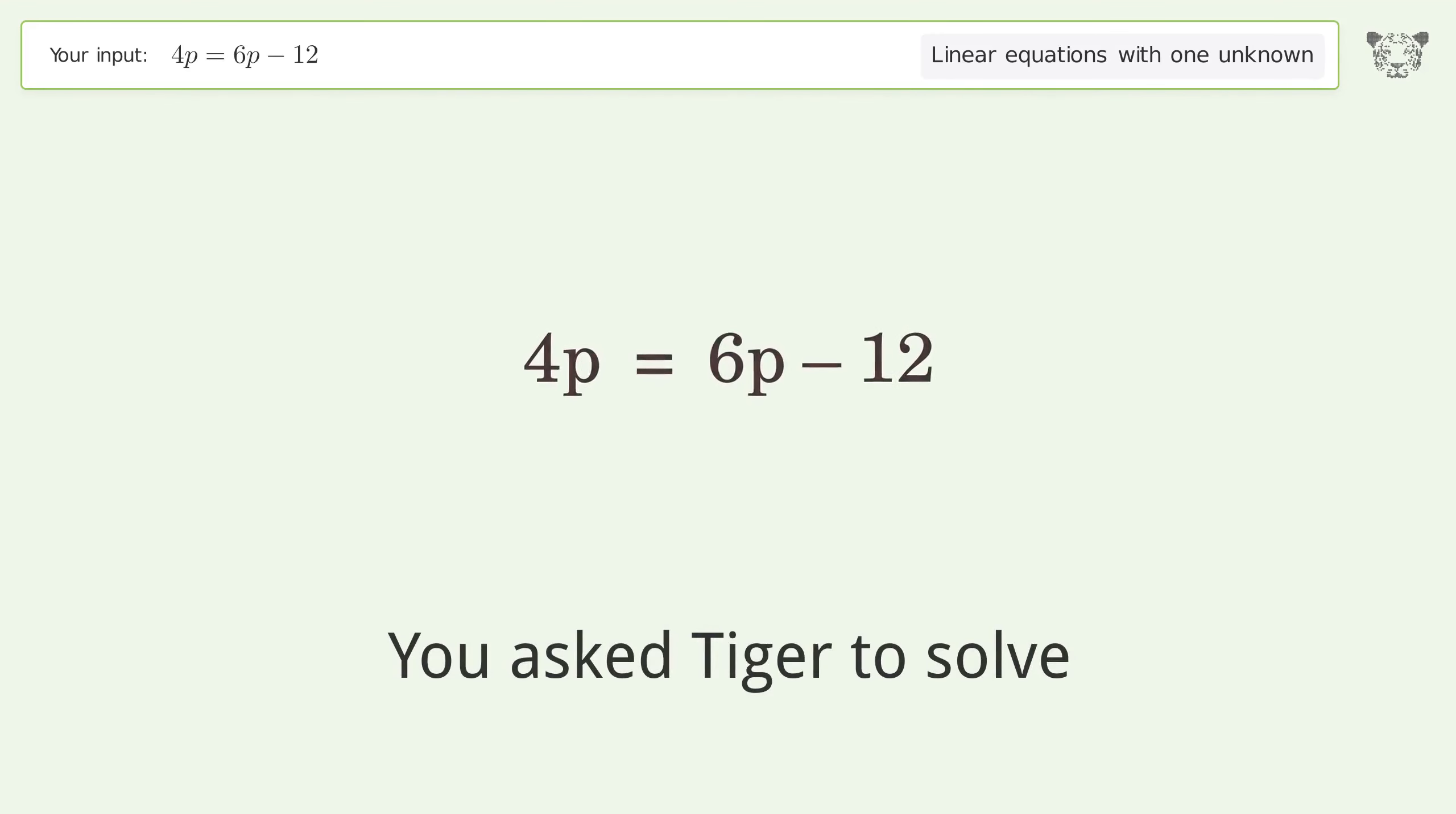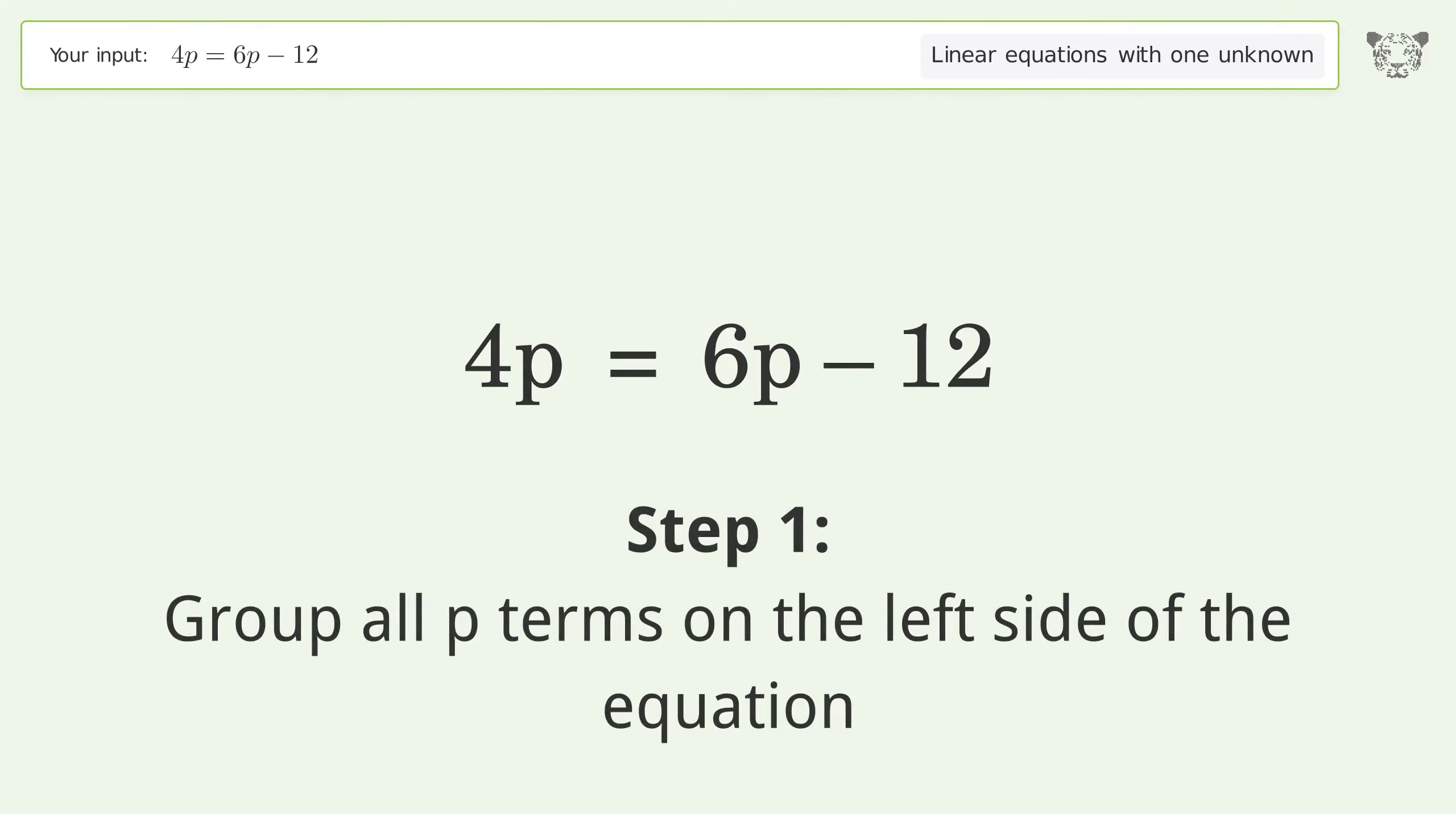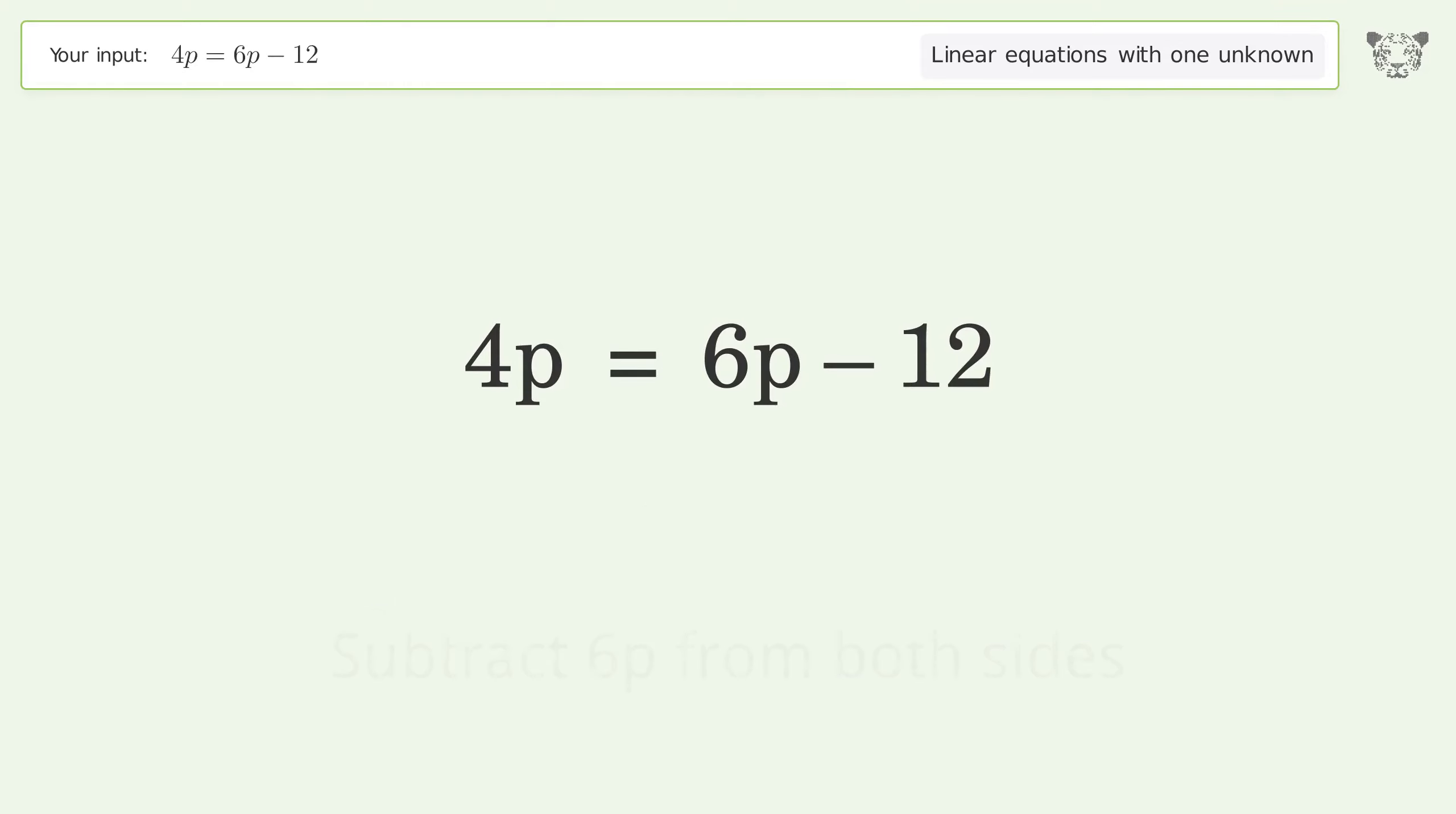You asked Tiger to solve this equation dealing with linear equations with one unknown. The final result is p equals 6. Let's solve it step by step. Group all p terms on the left side of the equation. Subtract 6p from both sides.